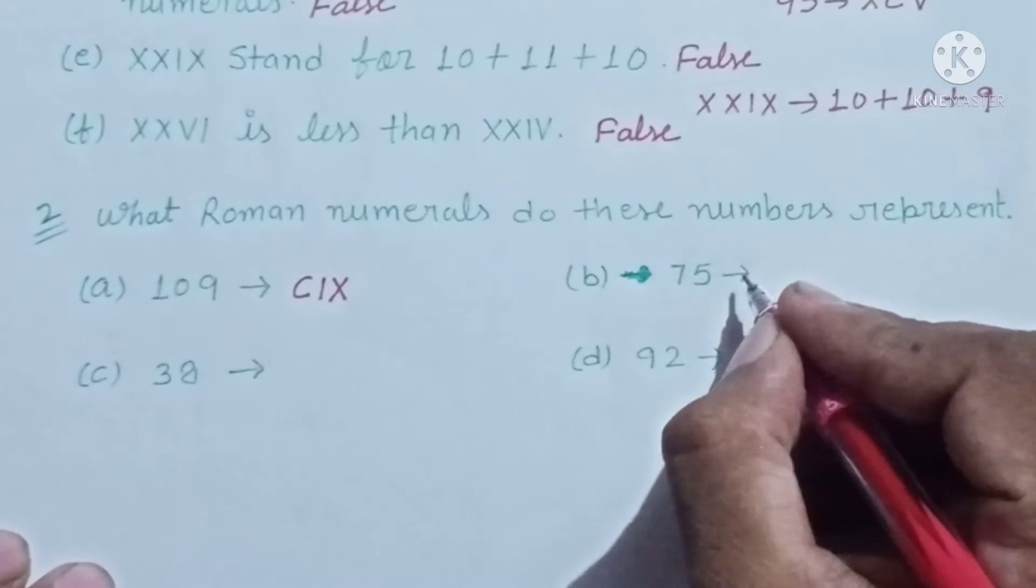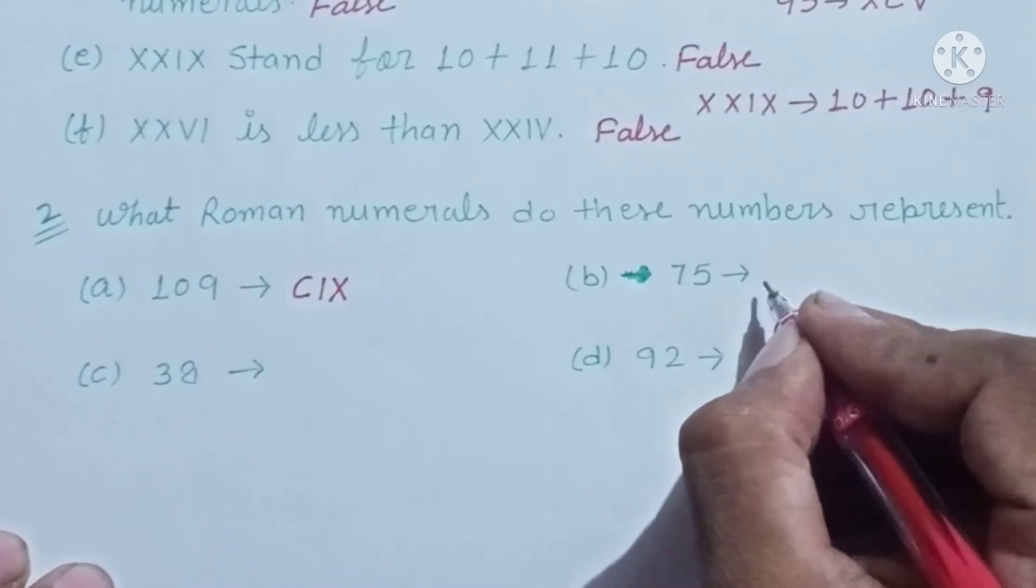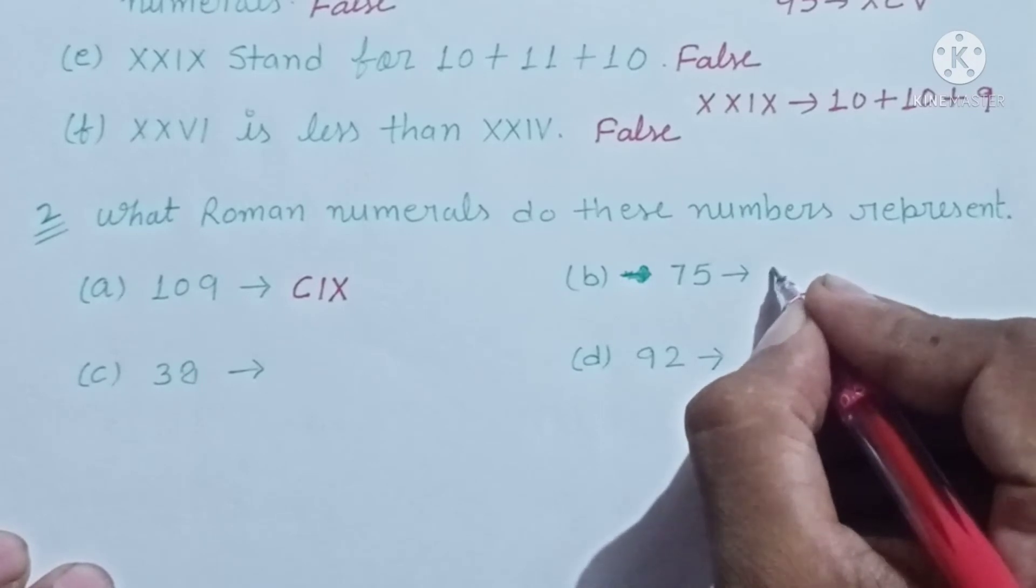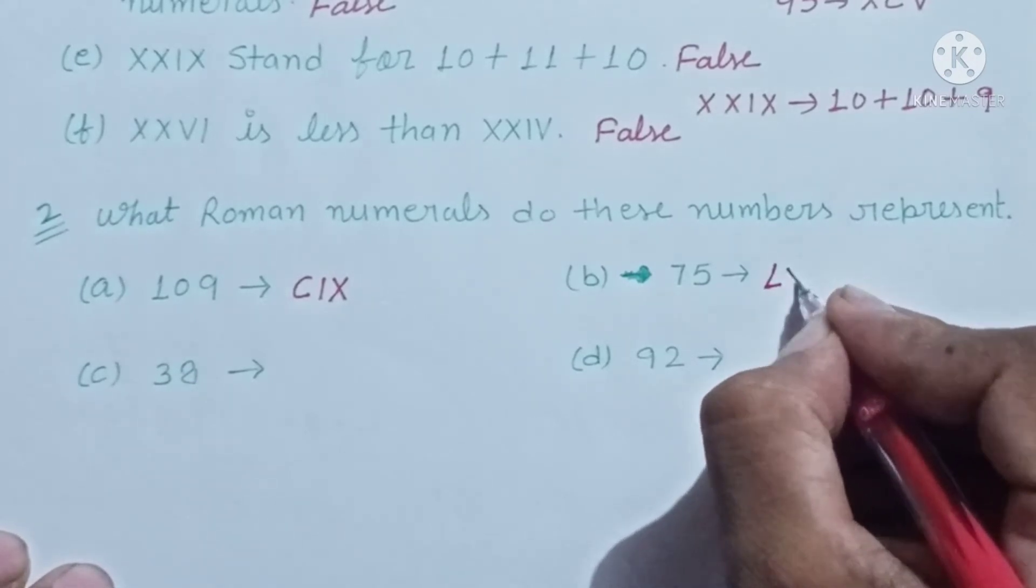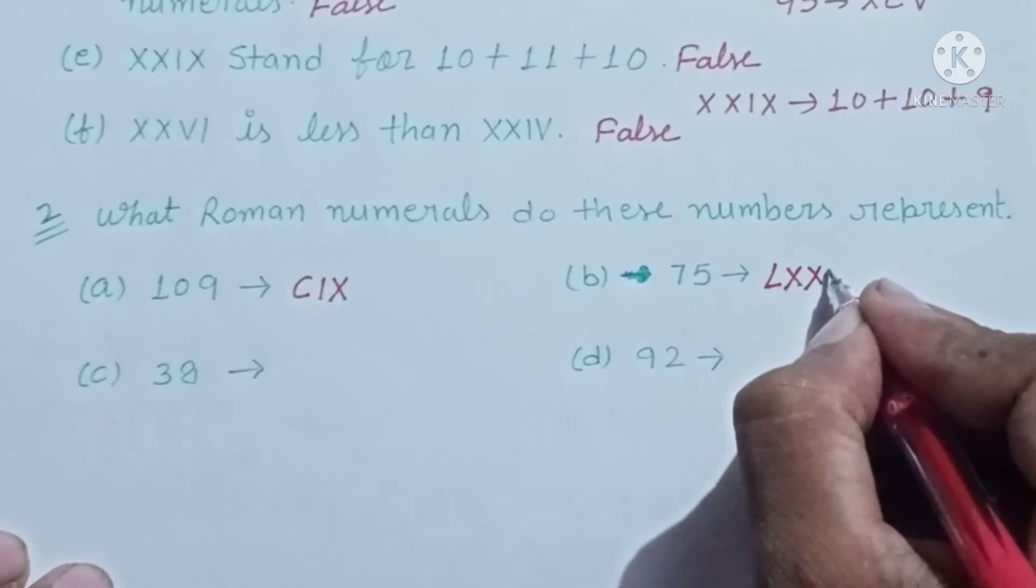Come to the next. 75 in Roman numerals. 75 is represented as L for 50, 10 is 60, 70, 75.